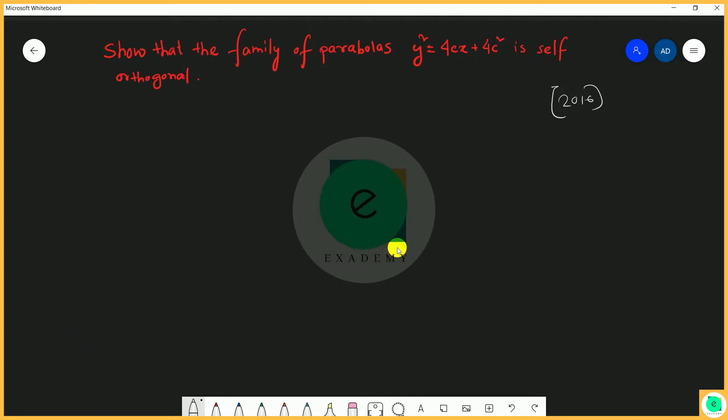Self-orthogonal basically means the orthogonal trajectory of the system of curves is that system of curve itself. This equation only. So this is how you can solve it.